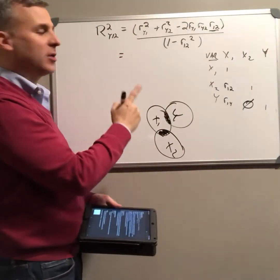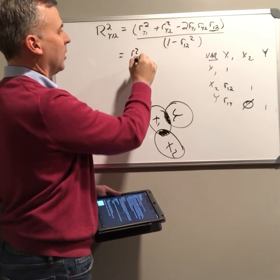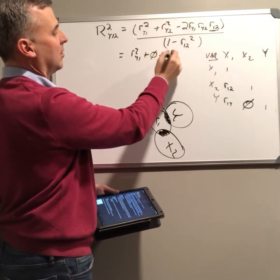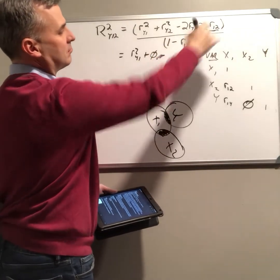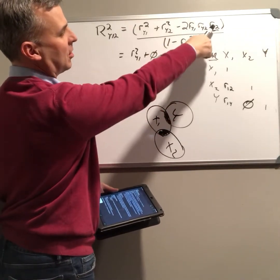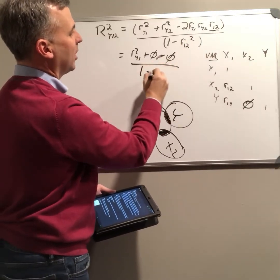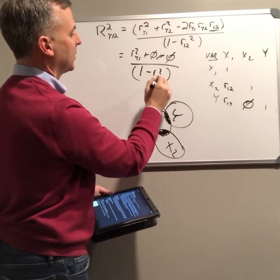Well, first of all, let's look at our equation for r squared. Well, this just stays r squared y1 plus 0 minus, also 0. Because here, r y2 goes to 0, all over 1 minus r squared 1, 2. Got it.